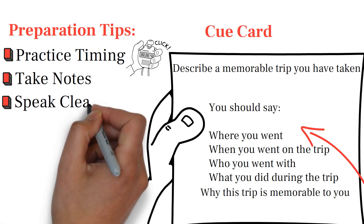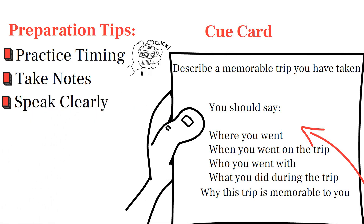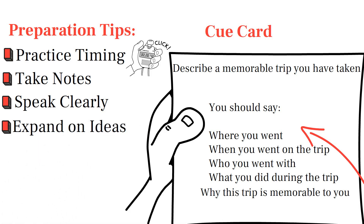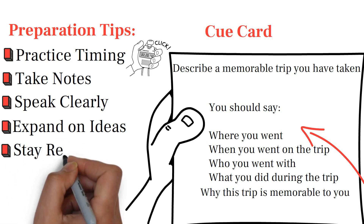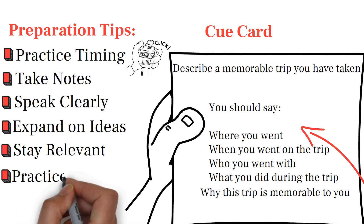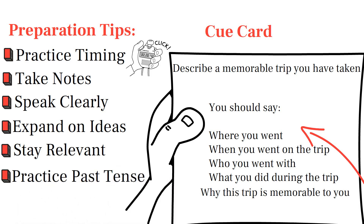Speak clearly: focus on clear pronunciation and enunciation, and avoid speaking too fast or too softly. Expand on ideas: provide detailed information and examples to support your points, and elaborate on the topic to showcase your language skills. Stay relevant: ensure that your response addresses all aspects of the cue card and don't stray off topic. Practice past tense: since you're describing a past experience, use past tenses appropriately in your response.